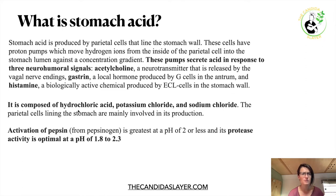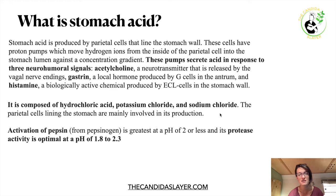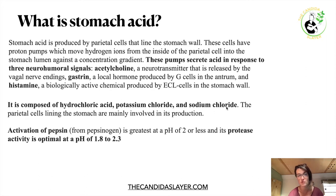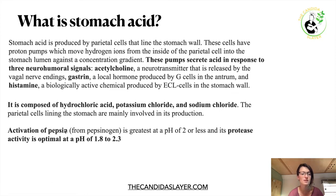The stomach acid is composed of hydrochloric acid, potassium chloride, and sodium chloride. The parietal cells lining the stomach are mainly involved in its production. This gives us a hint about what your body needs to make gastric acid — you need potassium and sodium chloride. Activation of pepsin, an enzyme that digests proteins, is greatest at a pH of 2 or less, with optimal protease activity at pH 1.8 to 2.3.